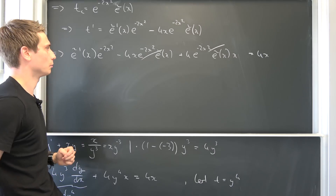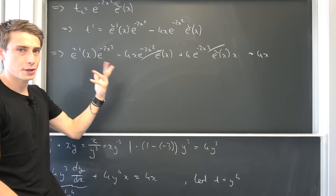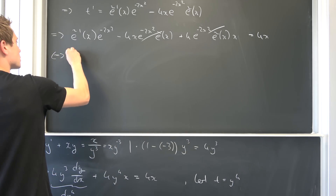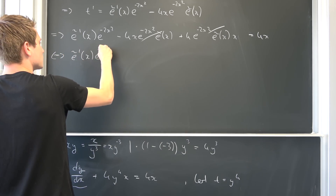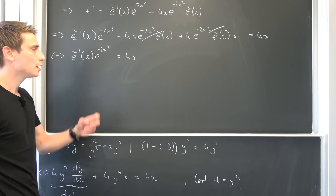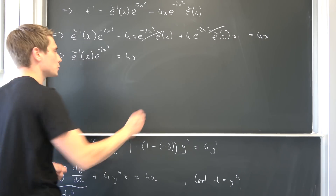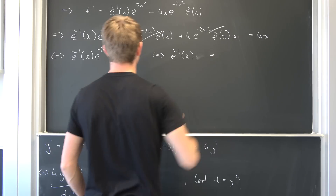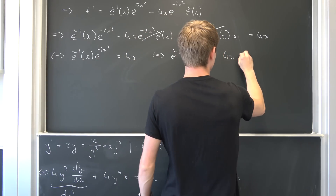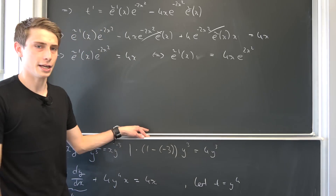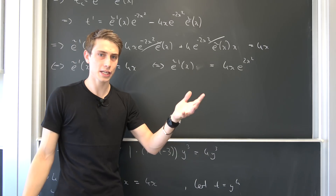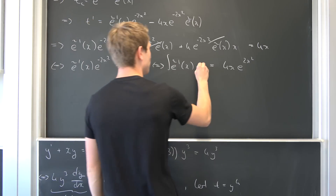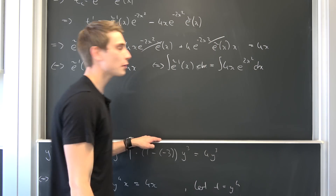Now we can solve for e-schlange prime. Writing it out: e-schlange prime of x times e to the negative 2 times x squared equals 4x. Multiplying both sides by the reciprocal of the exponential — which is never zero — we get e-schlange prime of x equals 4 times x times e to the 2 times x squared. We can find e-schlange of x by integrating this with respect to x.